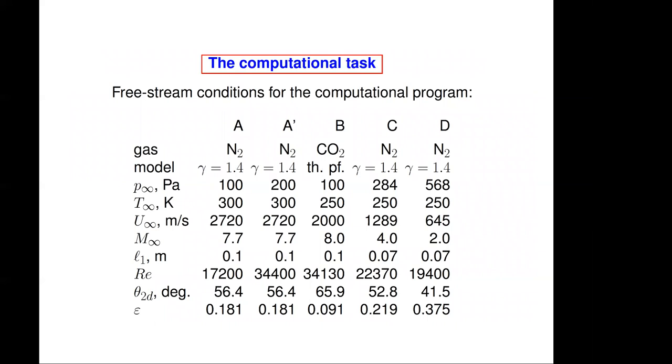So let me come back to my computational task. I chose five conditions, all with perfect gas nitrogen, except one with thermally perfect carbon dioxide. I have here the gas, the model, the pressure, the temperature, the velocity, the Mach number, L1, the Reynolds number, and the detachment angle, as well as epsilon. So the reason why I chose this CO2 condition is that it has a very much larger second cone detachment angle, so that the range of detachment angles is from 41 to 65, which is good because we know the importance of the detachment angle. Condition A and A prime differ only in the pressure, so this is to check the effect of Reynolds number in a small way. And all are at high Mach number, except here 4 and 2.